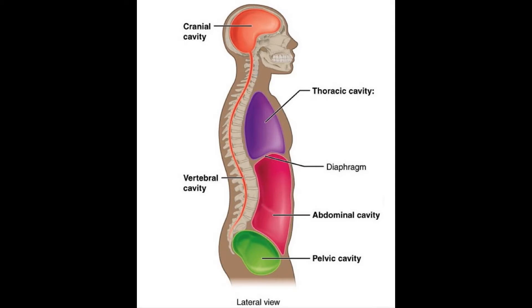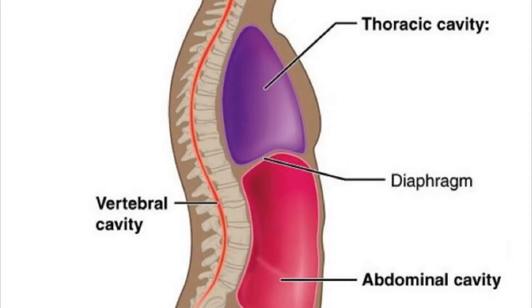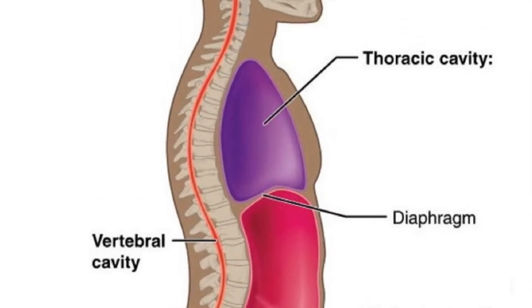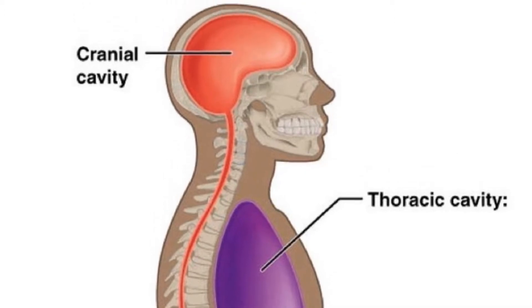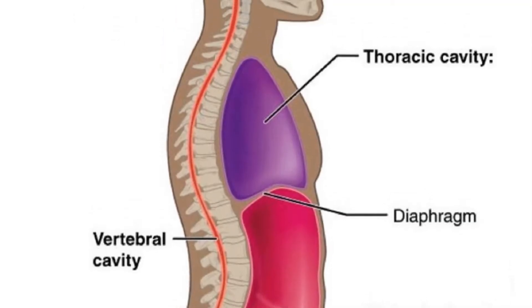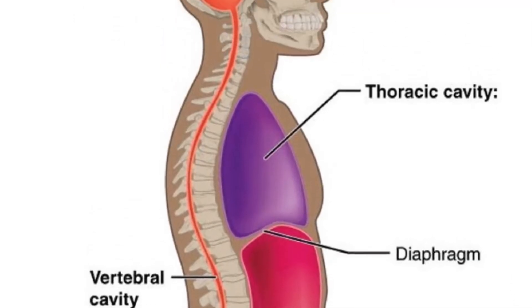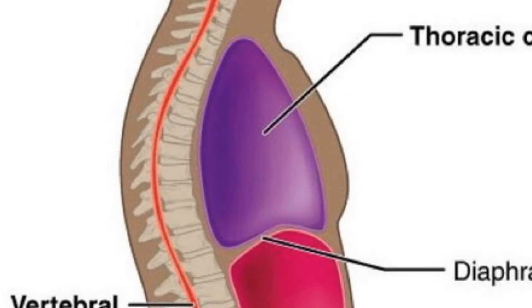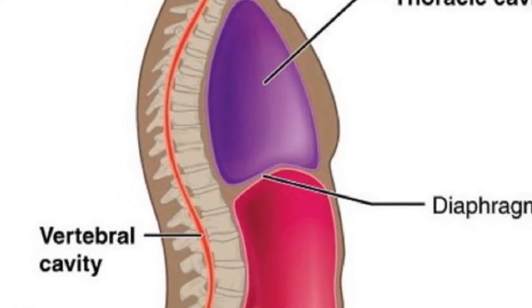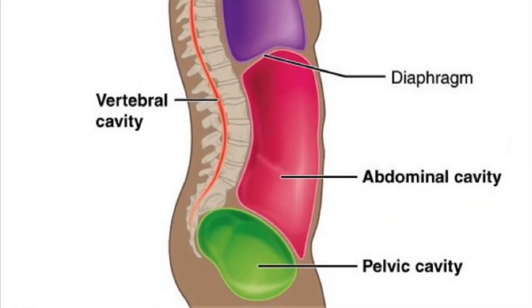Hey guys, it's Layla. Today we'll speak about the thoracic cavity. In general, we have four different cavities: you have the dorsal cavity, which includes the cranial cavity, and then you have the ventral cavities of the body, which includes the thoracic cavity, the abdominal cavity, and the pelvic cavity, also known as the abdominopelvic cavity.